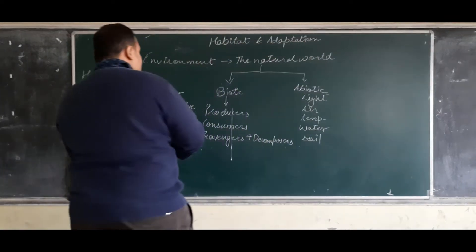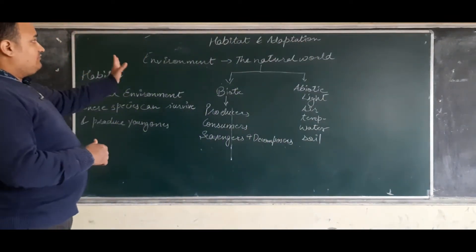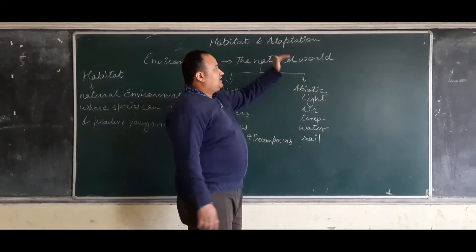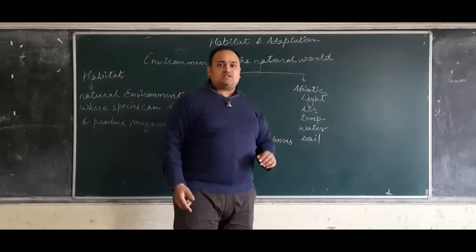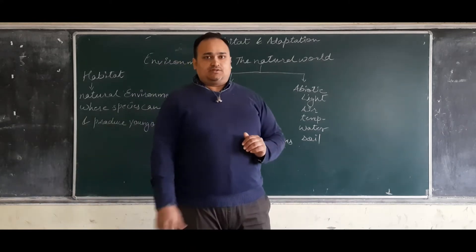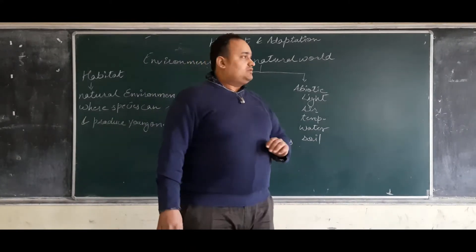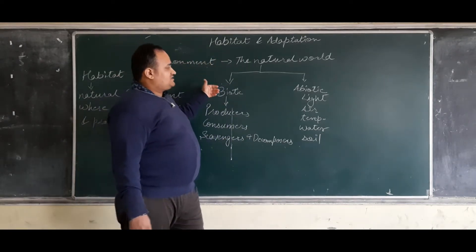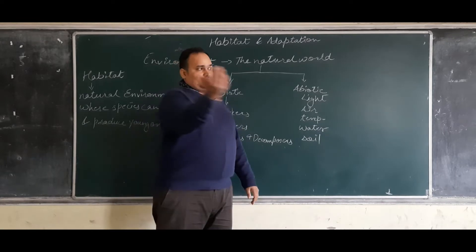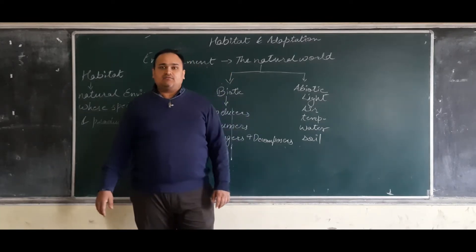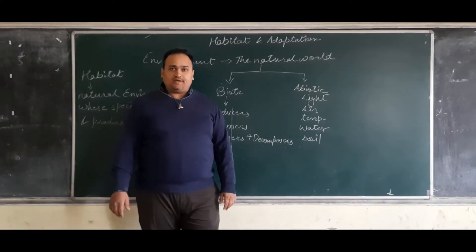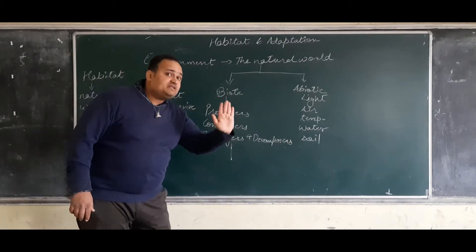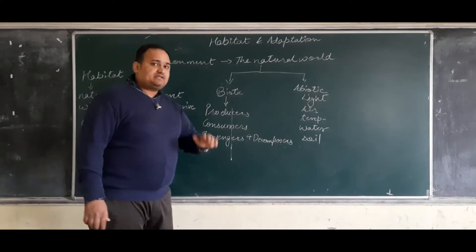So, the first topic in the chapter is environment. What is environment? The natural world around us. Environment can be divided into two parts: biotic and abiotic. When we are talking about living things, biotic means living things.